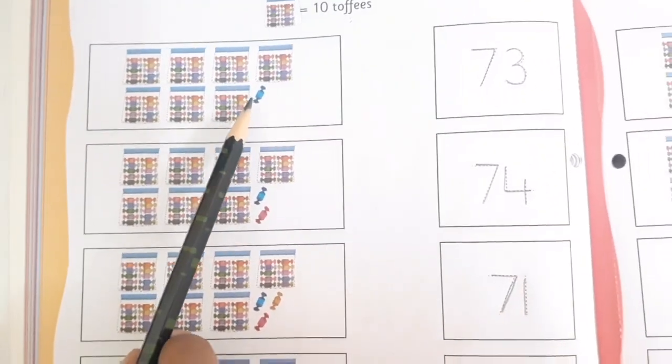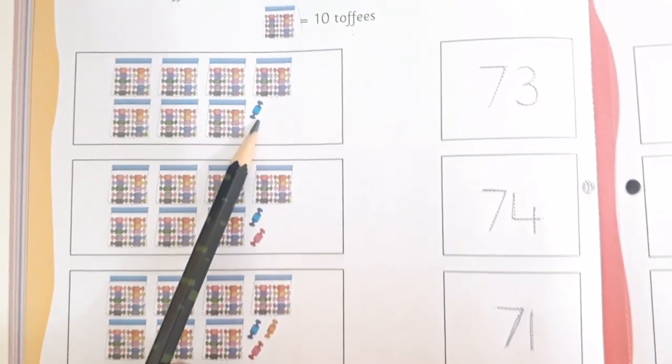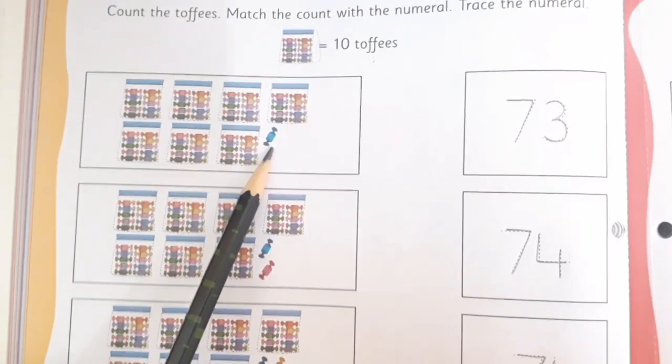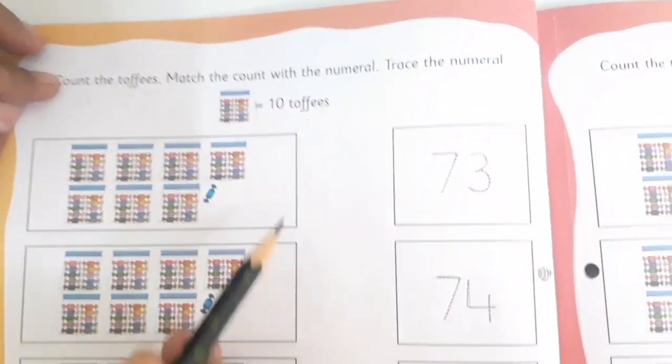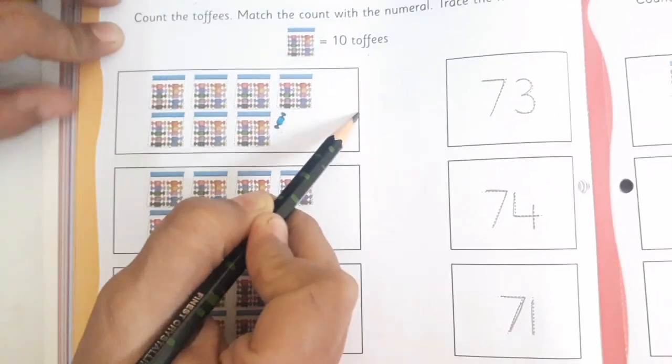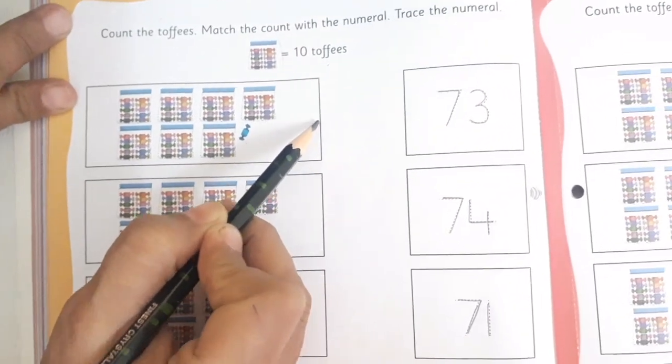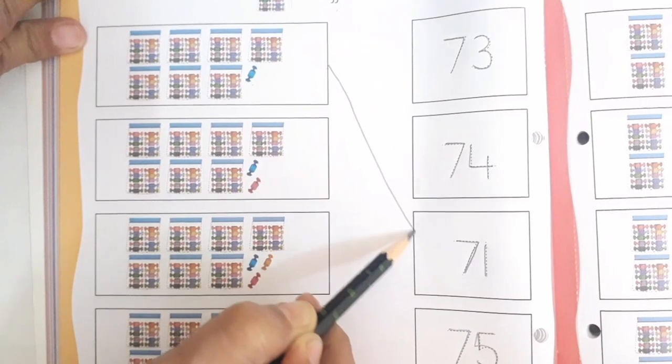And one more chocolate is there, right? So 70 and 1, 71. So we are going to match the count with the numeral. So like this.